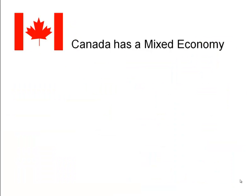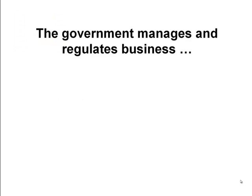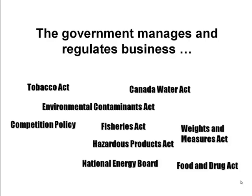Canada has a mixed economy. In what ways is Canada's economy like a command economy? Government manages and regulates businesses — there's a whole variety of rules and regulations that various levels of government impose upon business. It keeps our water clean, prevents people from chopping down all the trees and ruining wildlife habitat, and ensures the products we purchase are safe. All these rules are imposed by government to look after the best interests of all of society.